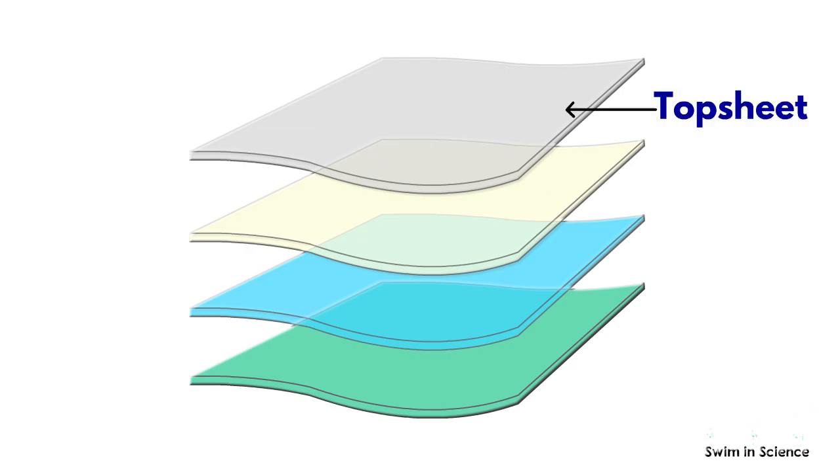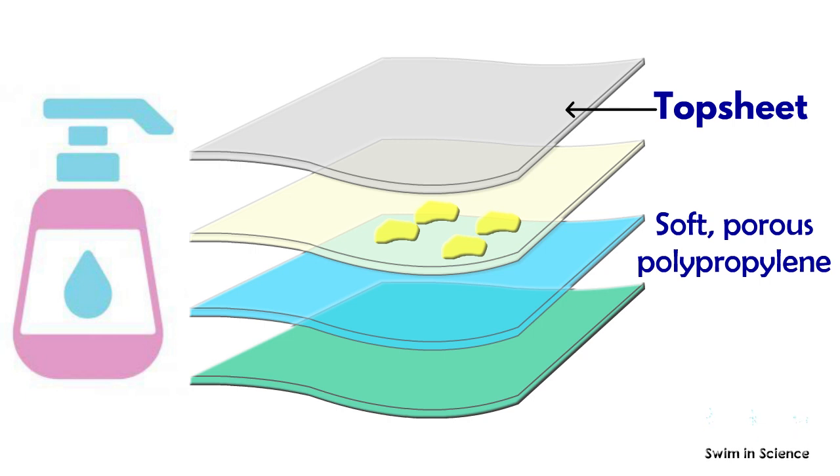The first layer is top sheet which is in direct contact with the baby's skin. It is composed of soft, porous polypropylene developed to transfer the urine and other liquids quickly to the below layers. The top sheet may also contain a lotion to help protect the baby's skin from over-hydration and irritation.